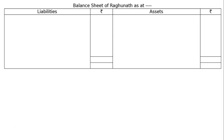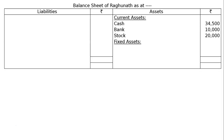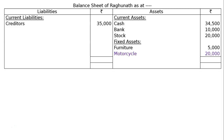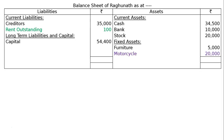They have also asked to prepare a balance sheet of Raghunath — the date is not given. We draw the format with liabilities and assets columns including the rupee symbol. Starting from the asset side: current assets — cash Rs. 34,500, bank Rs. 10,000, stock Rs. 20,000. Fixed assets — furniture Rs. 5,000 and motorcycle Rs. 20,000. On the liabilities side: current liabilities — creditors Rs. 35,000, rent outstanding Rs. 100. Long-term liabilities and capital — capital Rs. 54,400. Total of both sides: Rs. 89,500.